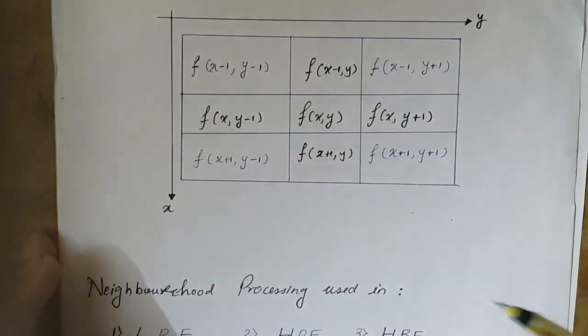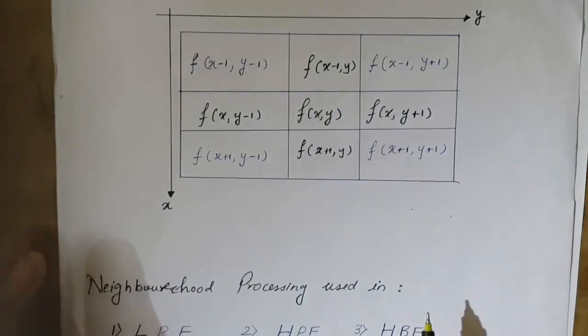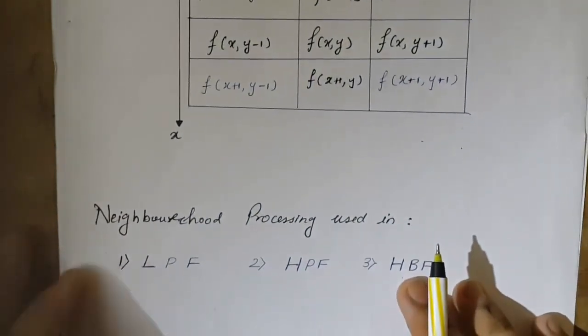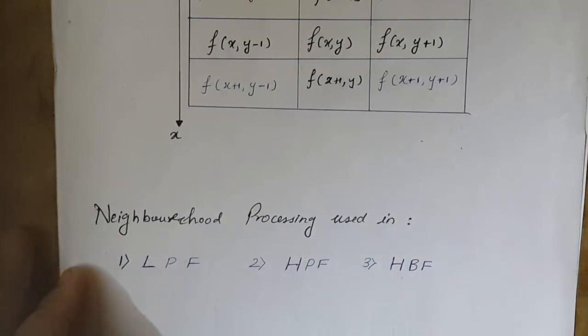Neighborhood processing is highly used in filtering. Some of the filters we are going to see in subsequent tutorials are low pass filters, high pass filters, and high boost filters.